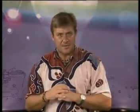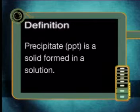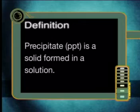A precipitate is a solid that is formed in solution as a result of a chemical reaction. The abbreviation for the term precipitate is PPT. This is an important term so please learn it — a precipitate, abbreviated PPT, is a solid formed in a solution.